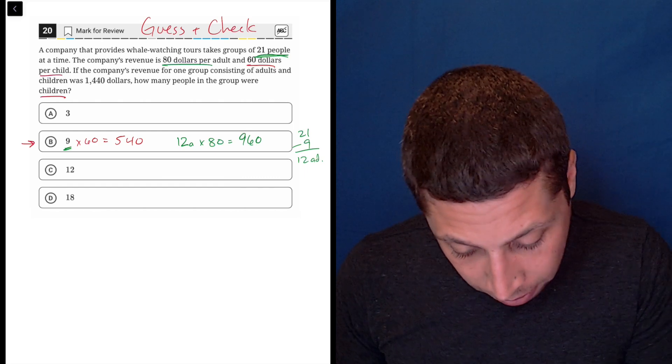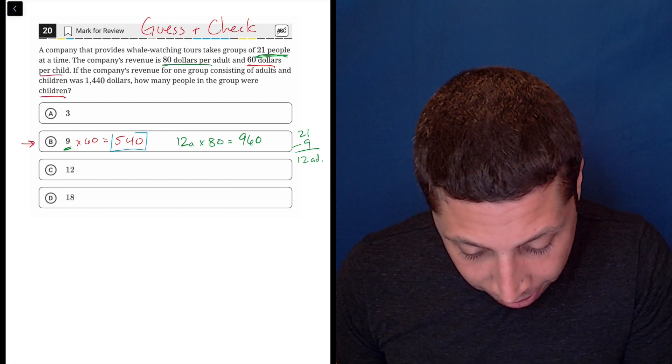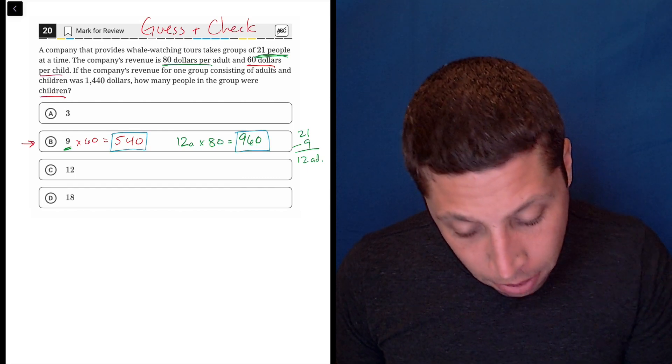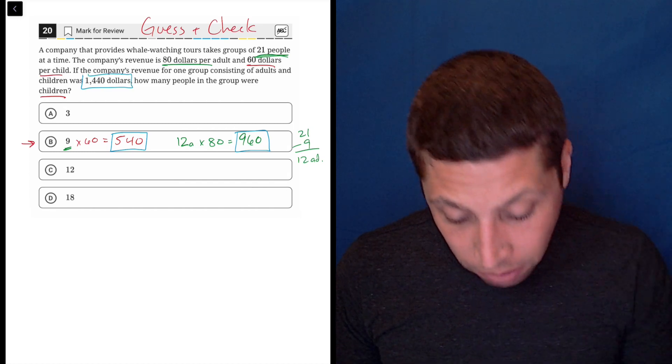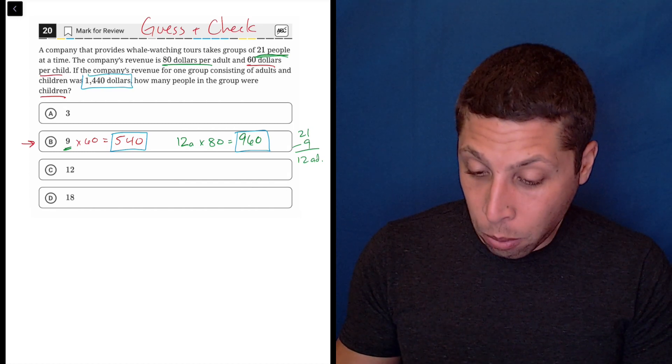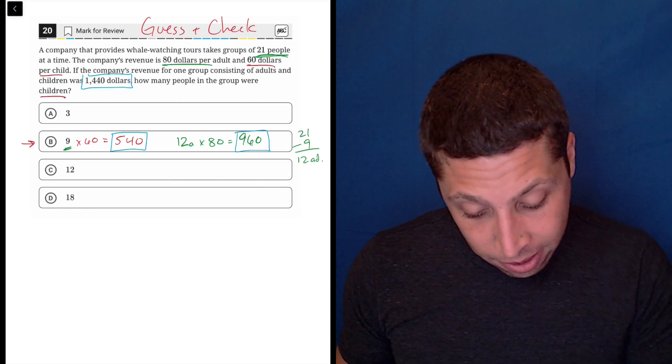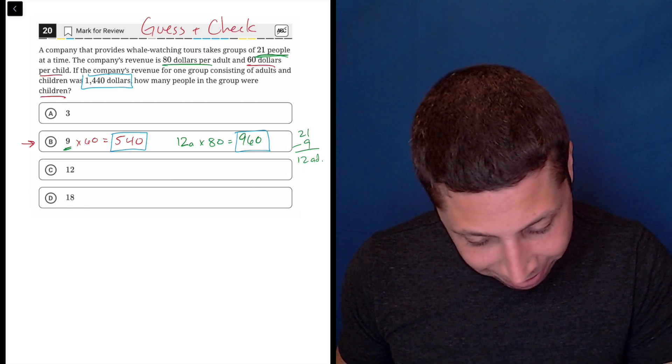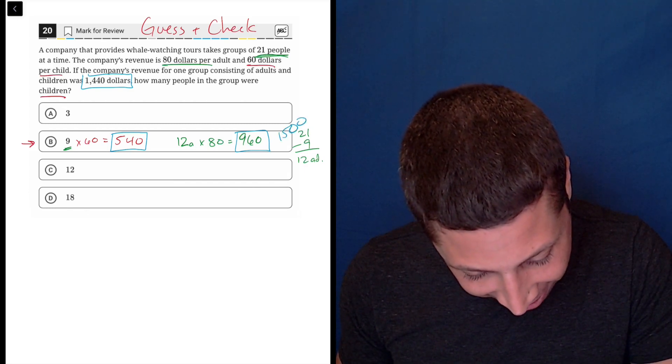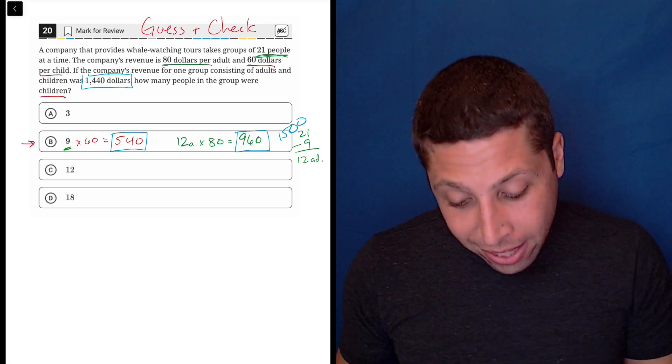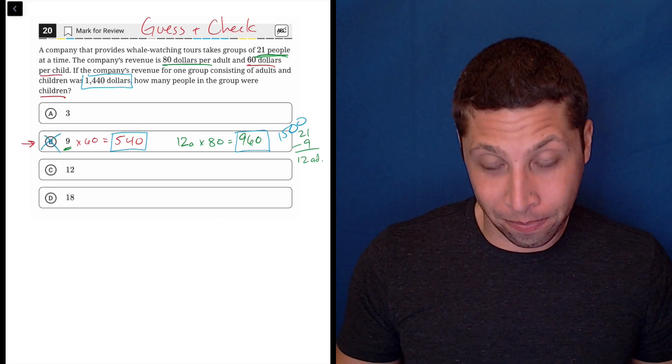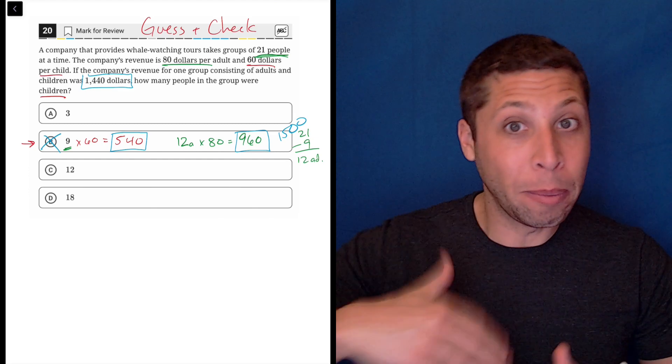So 12 times 80 is 960. Now I can say, what happens if I add the two numbers up? It's supposed to be 1440. So 540 plus 960 is 1500. Let's write it here, 1500. So that's too high, that's too big. I need it to be lower.